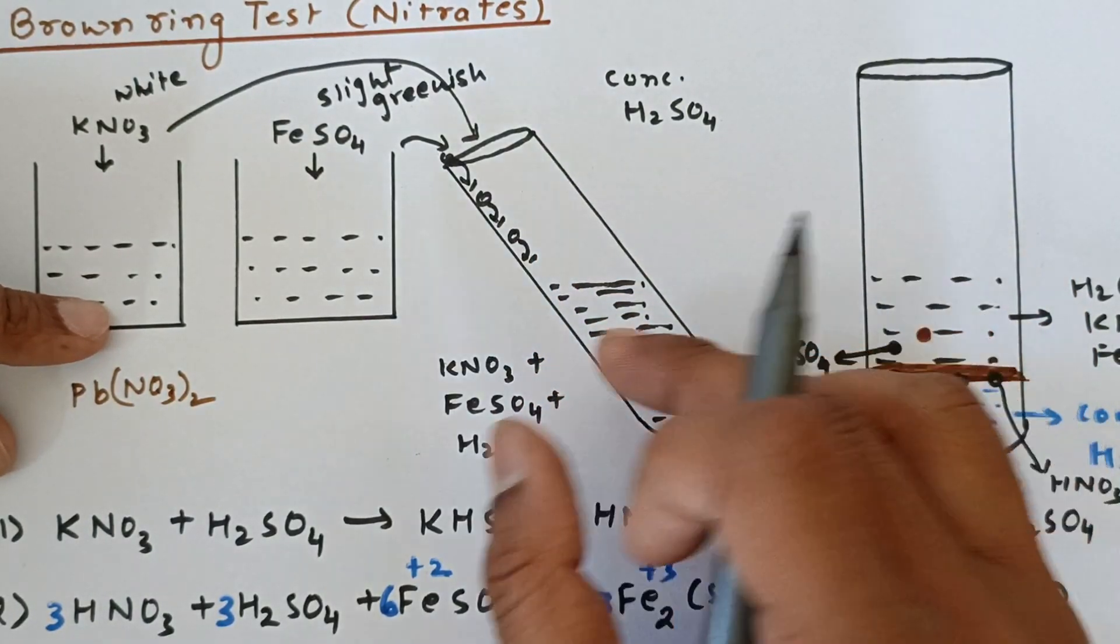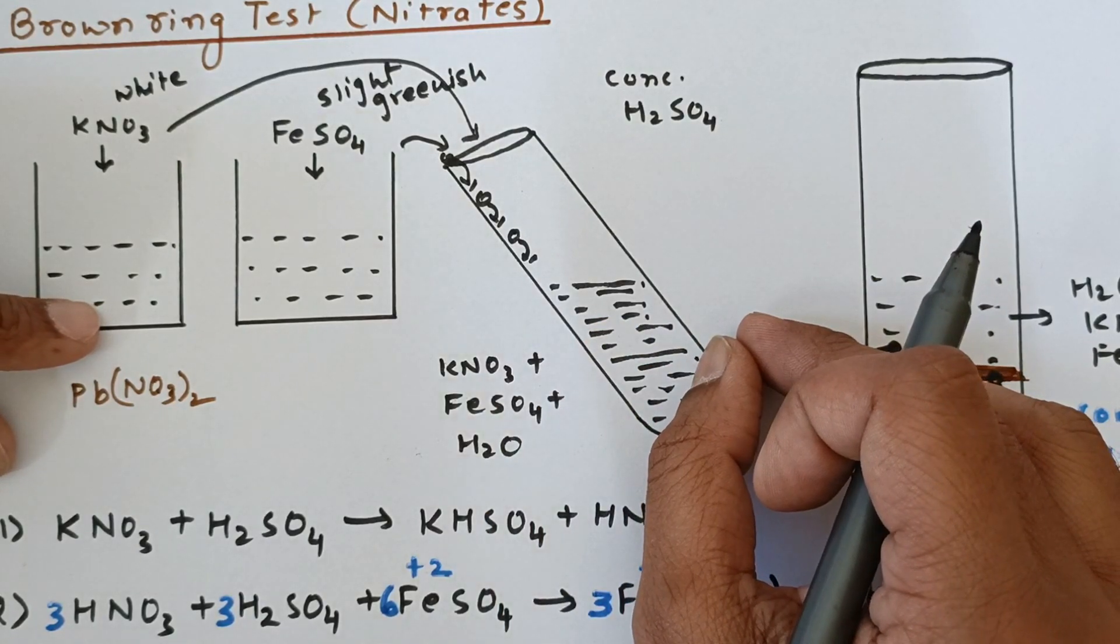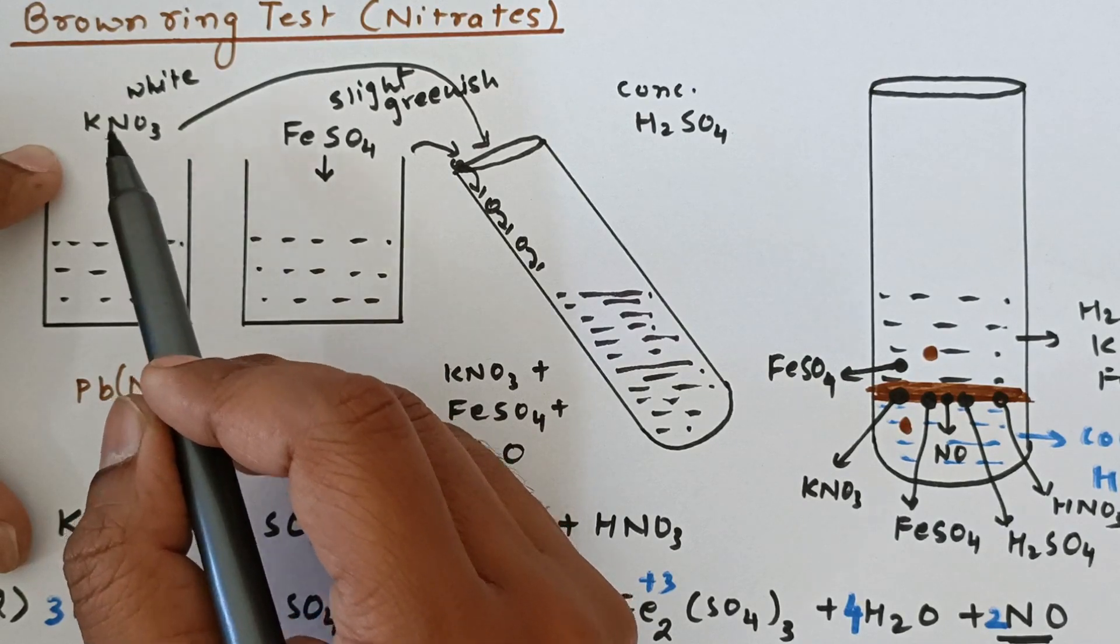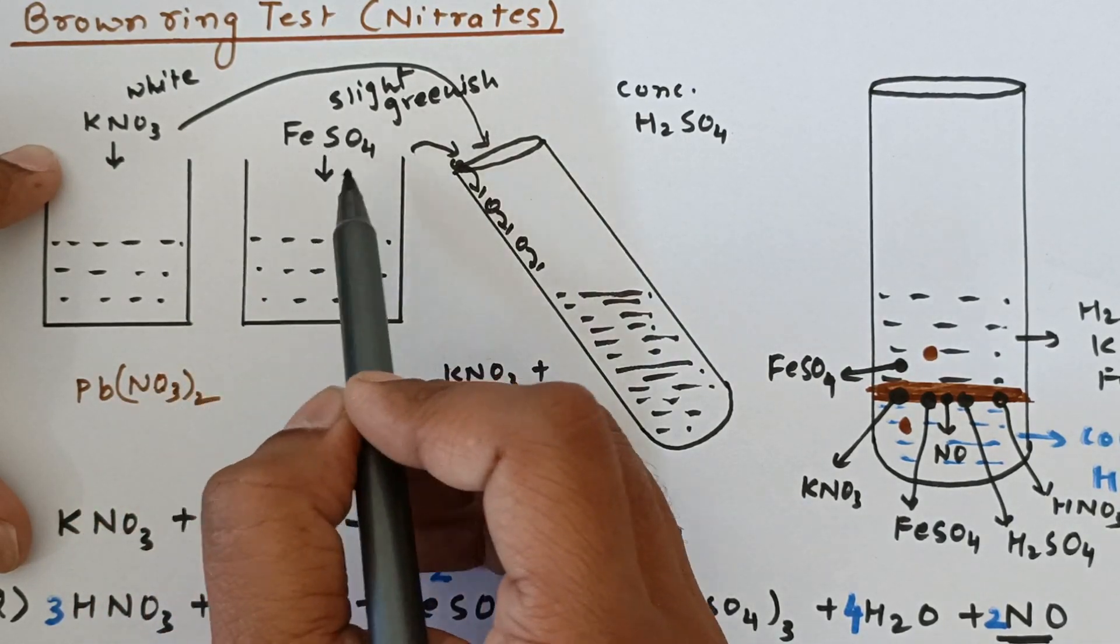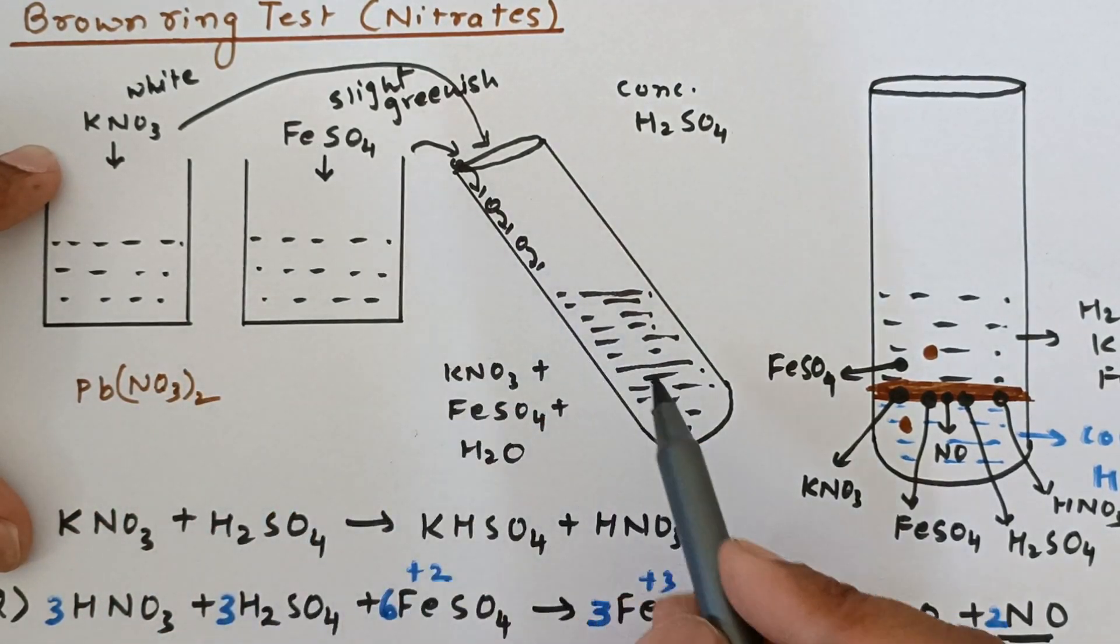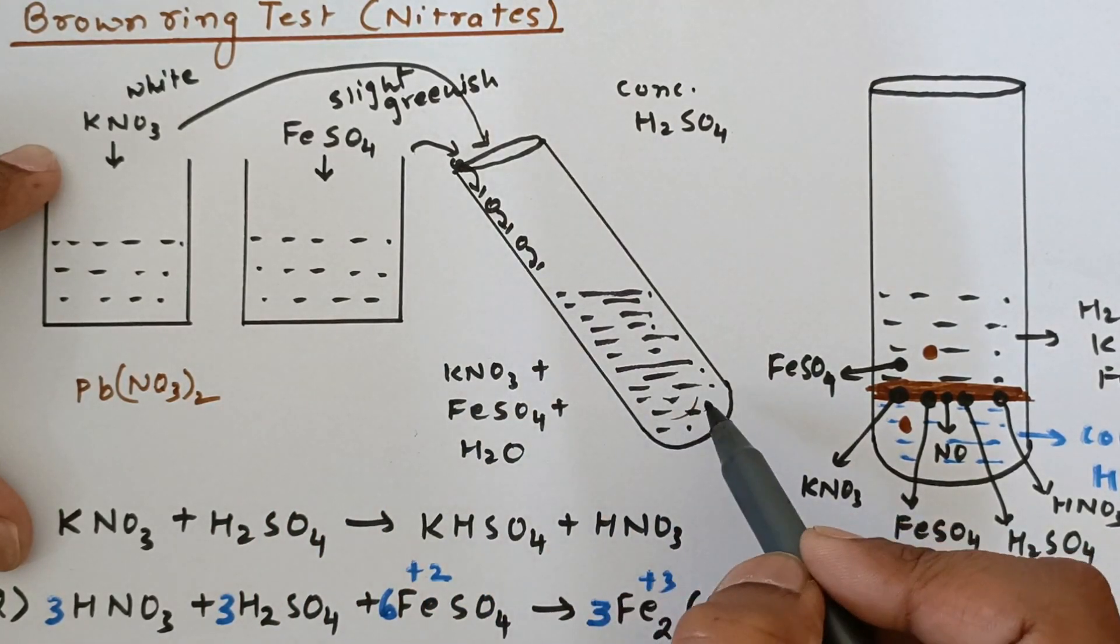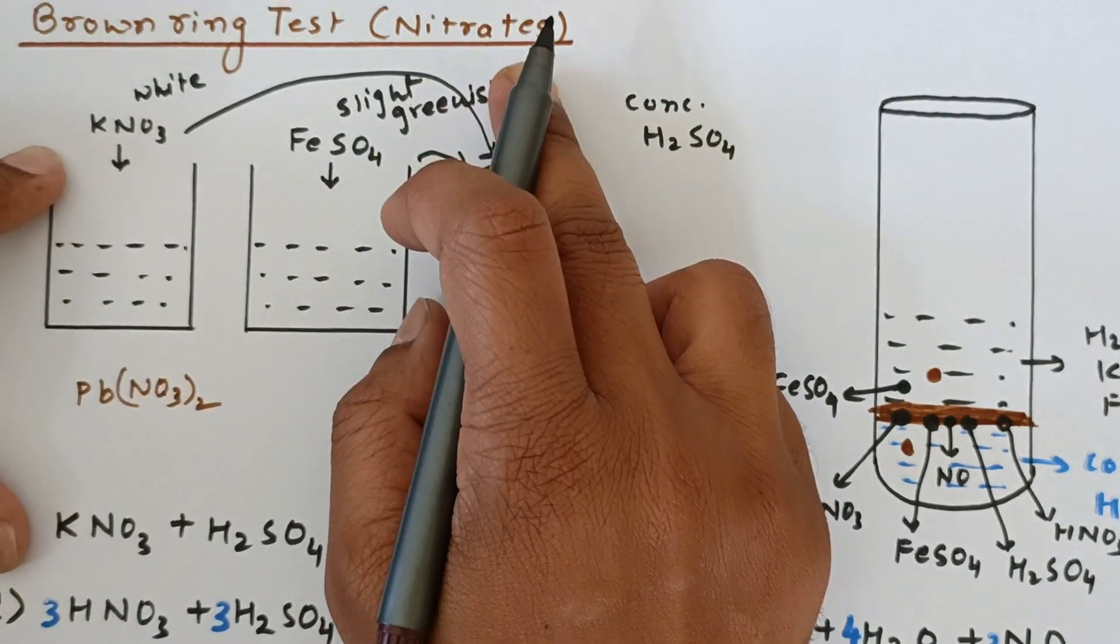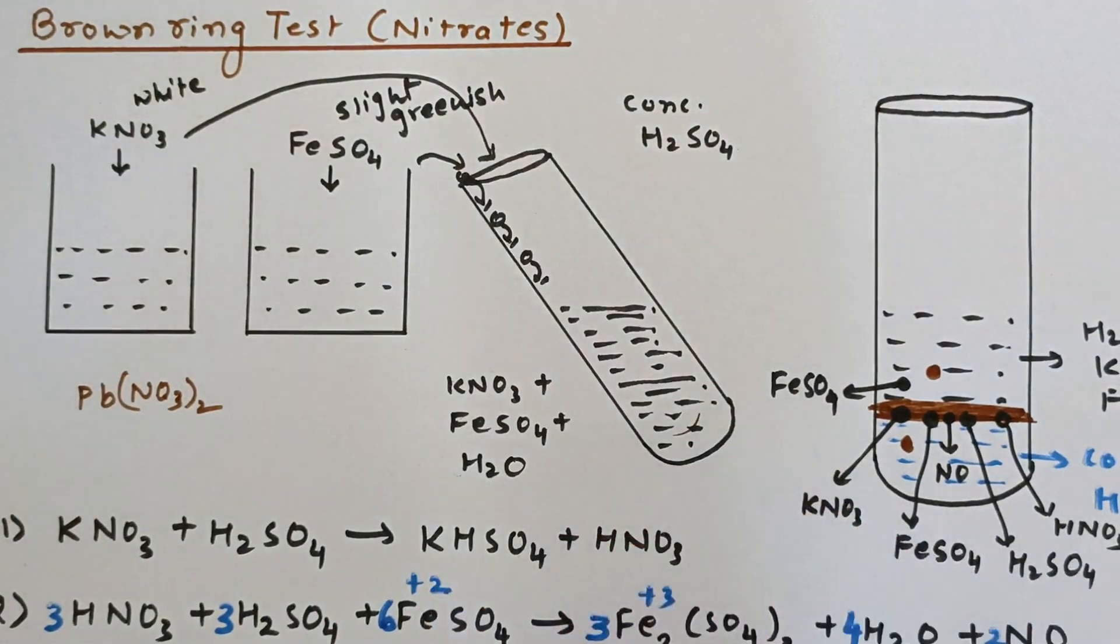So you should understand that only those nitrates whose reaction with FeSO4, if they yield products which are soluble in water, then and only then those nitrates would give you the ring test. I hope you have enjoyed the explanation. Thank you for watching the video.